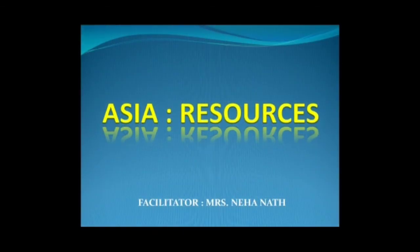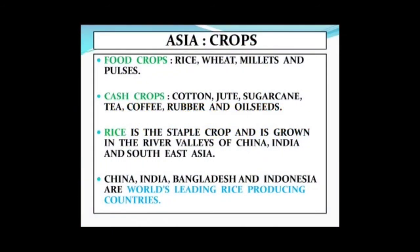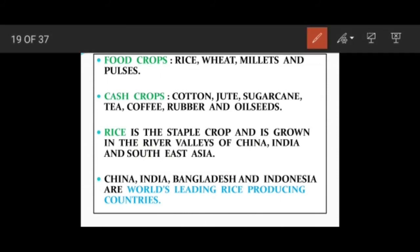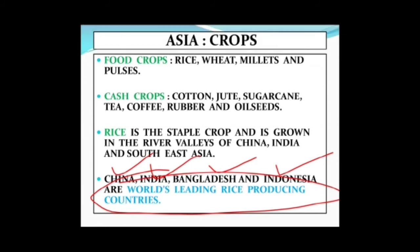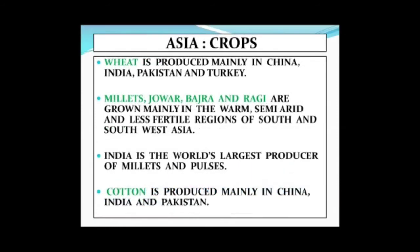The main food crops grown in Asia are rice, wheat, millets and pulses, and the cash crops include cotton, jute, sugarcane, tea, coffee and oil seeds. Rice is a staple crop and grows mostly in China, India and Southeast Asia. China, India, Bangladesh and Indonesia form the world's leading rice-producing countries. Wheat is produced mainly in China, India, Pakistan and Turkey. Apart from wheat, millet, jowar, bajra, ragi, pulses and cotton are also produced in different countries of Asia.